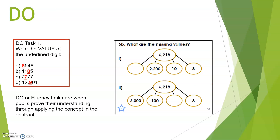This moves on to the 'do', or the varied fluency questions. Here the children are presented with basic calculations to do with place value. They're all based around the same piece of learning but represented in different ways. This means the children have a really good understanding of place value by the time they've finished the 'do'.